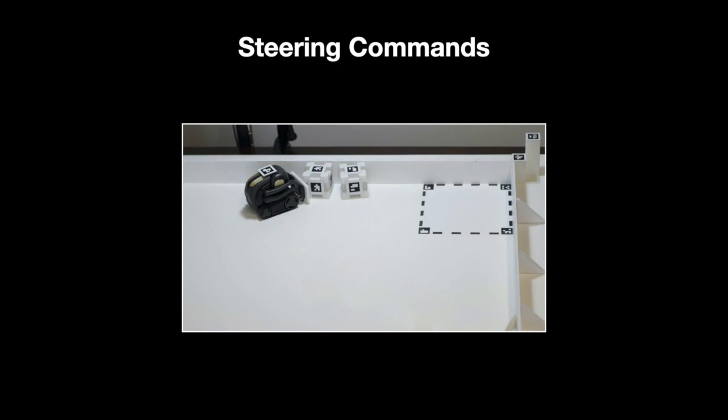In a typical setup for learning robotic navigation, an agent is given a representation of the current state from which it predicts a steering command, such as go forward, turn left, or turn right.